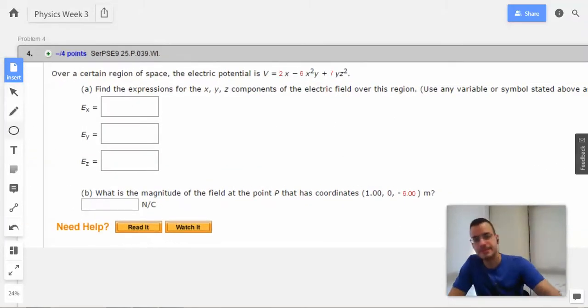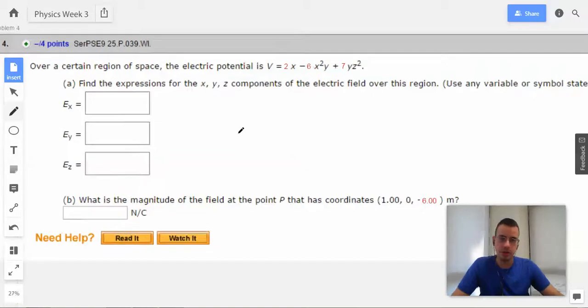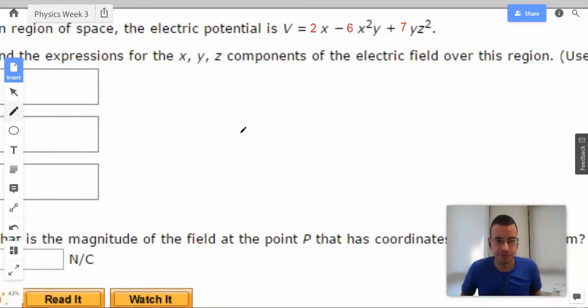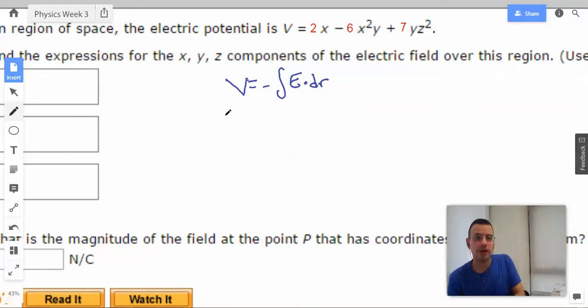Okay. So, remembering back maybe 12 or 14 seconds, we know that voltage equals negative integral E dot dr. So if we want to go the other direction and solve for E, we're going to take a divergence of voltage. As I'm sure you remember, this is a dot product.